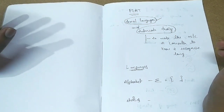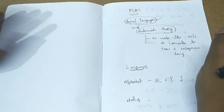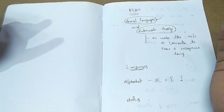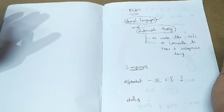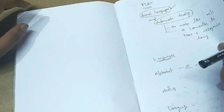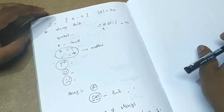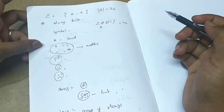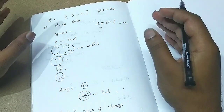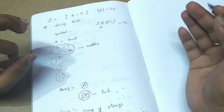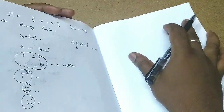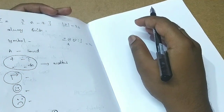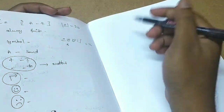In the second video we learned basics like what is a symbol, what is an alphabet, what is a string, and what are languages. This is the continuation of the previous video. If you didn't see the previous video on basics of strings and alphabets, just go back to it and then come to this video. In this video I will model the formal languages.